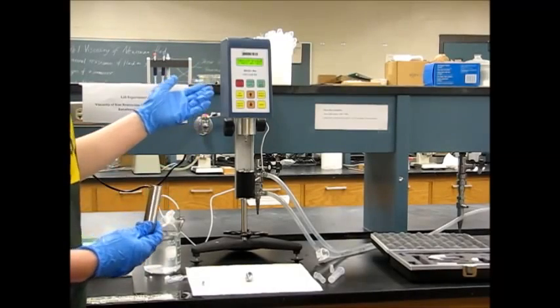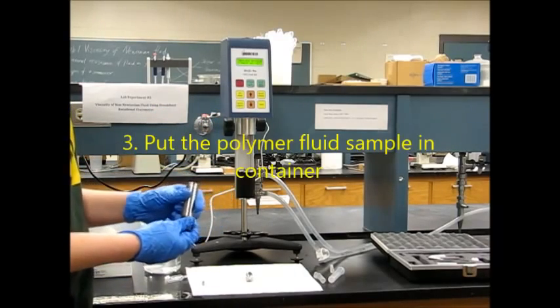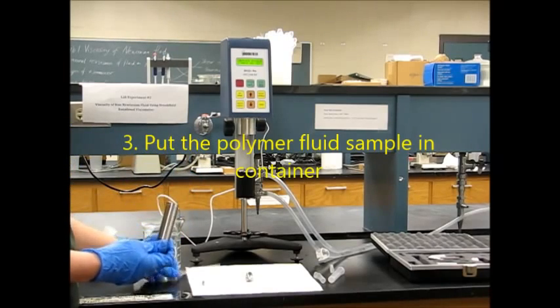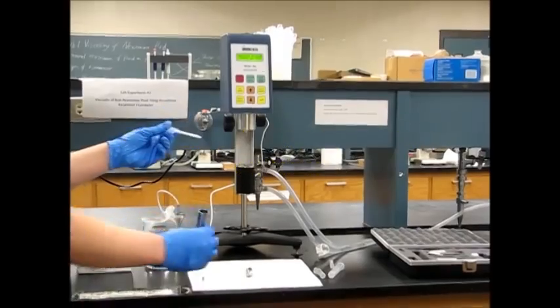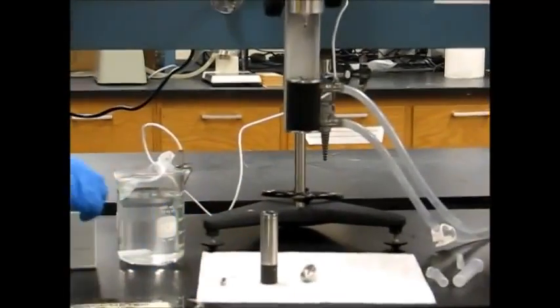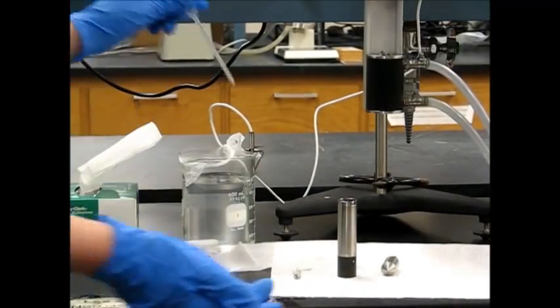Now it's telling us to replace the spindle. But before we can do that, we need to fill our sample container around 25% full with our polymer solution. It's going to take about three squeezes to get to 25%. Be careful because this fluid is very viscous and it will make a mess.